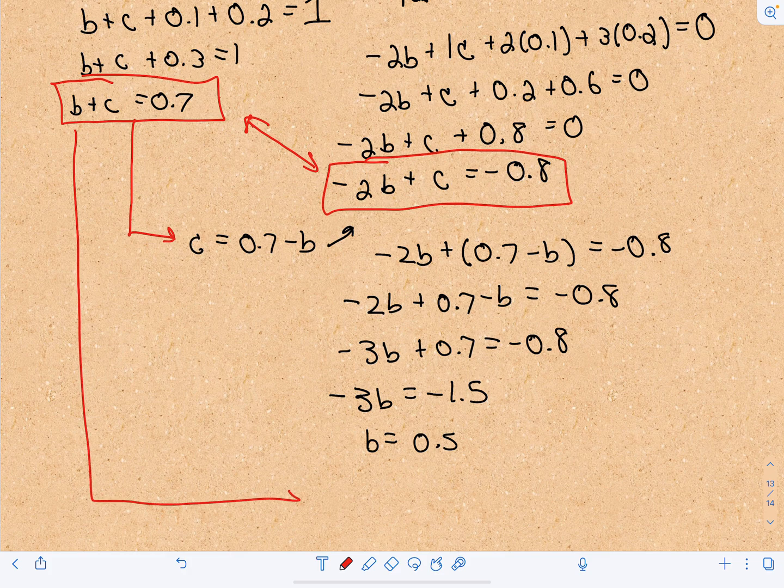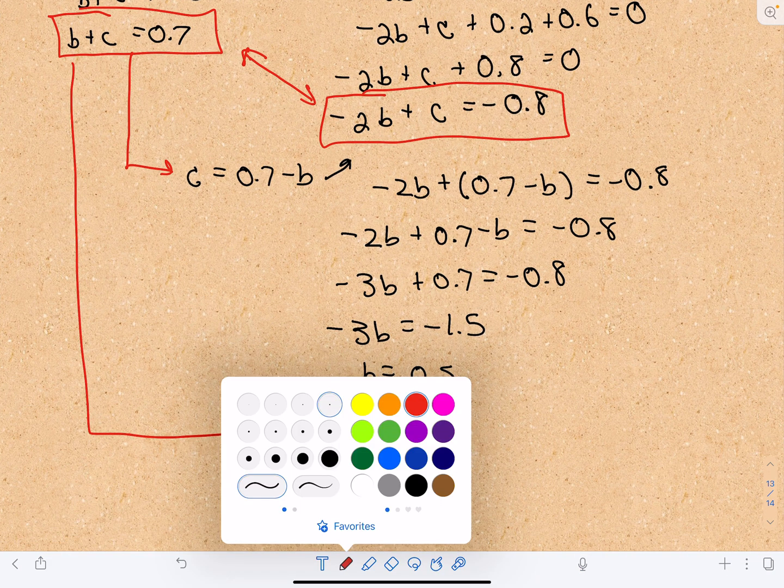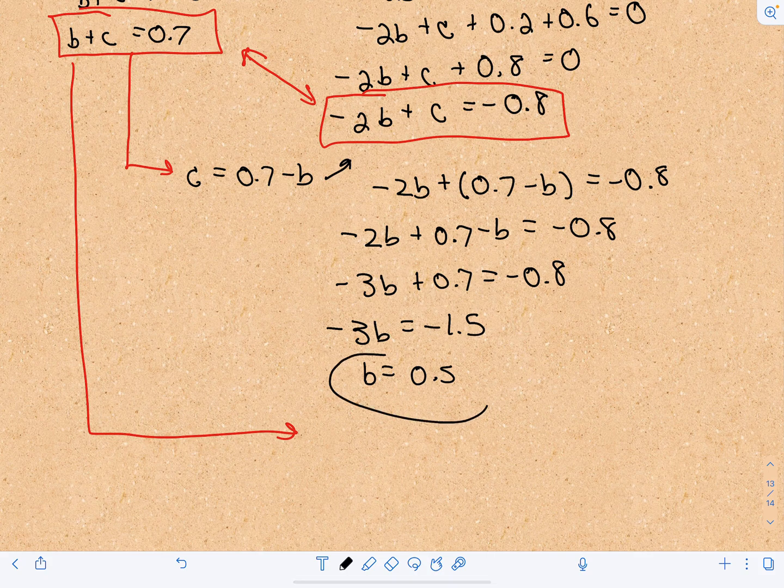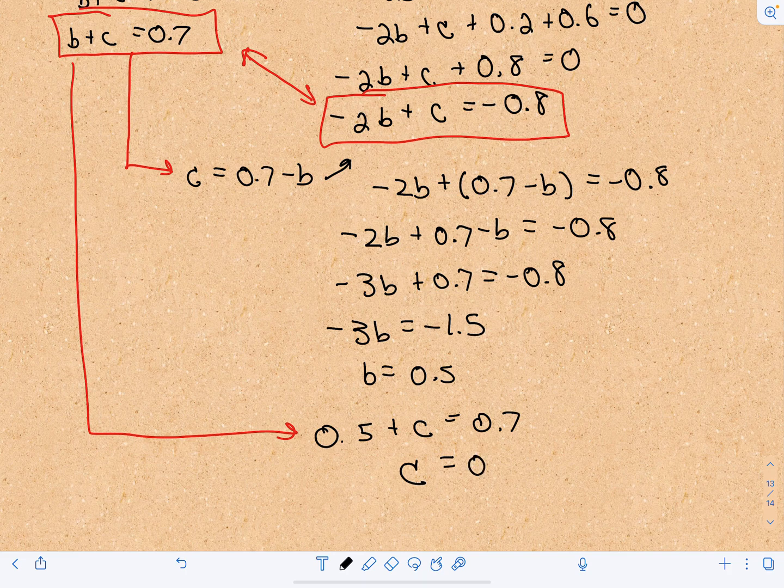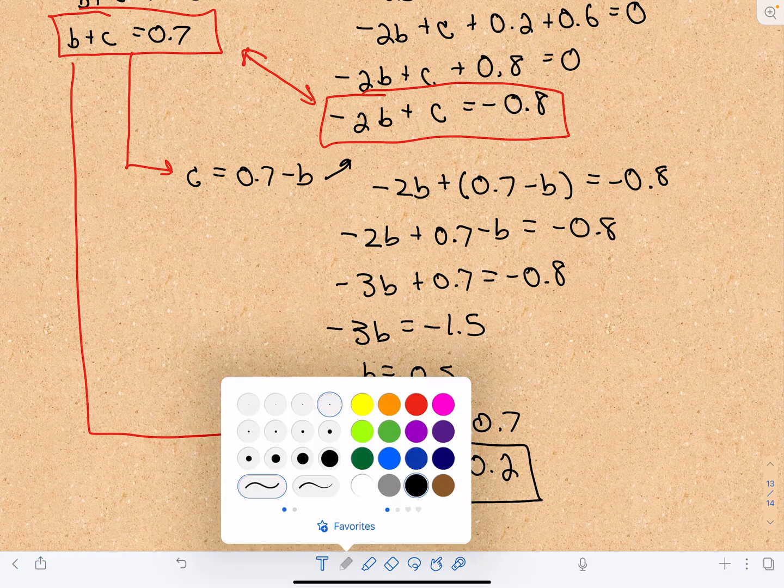But we now know what B is. It's 0.5. So 0.5 plus C equals 0.7. And if we subtract 0.5 from both sides, that'll give me that C equals 0.2.